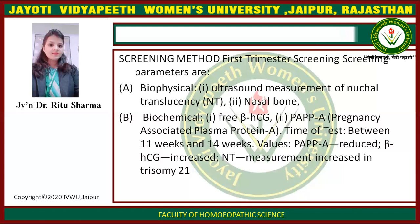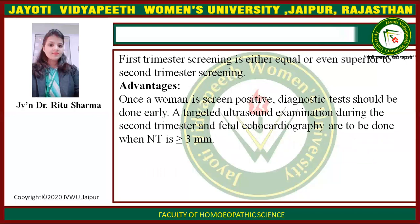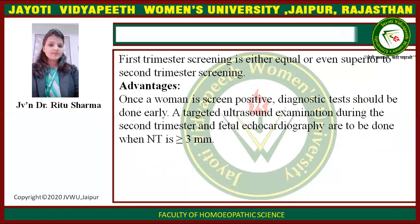Nuchal translucency measurement is increased in trisomy 21. Screening in the first trimester is either equal to or even superior to second trimester screening. Advantages: once a woman is screened positive, diagnostic testing should be done early. A targeted ultrasound examination during the second trimester and fetal echocardiography are to be done when NT is more than 3 mm.